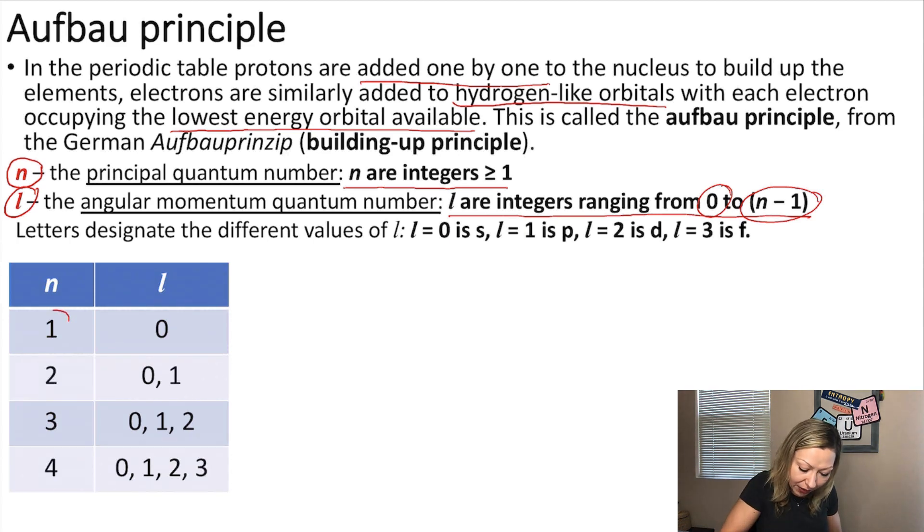Based on this, if n equals one, l can be any number from zero to n minus one, so my l will be zero. And this is actually called the S orbital. If n equals two, my l can be zero or one. Remember, it can be any number up to n minus one. So if l equals one, I'm going to have a P orbital.